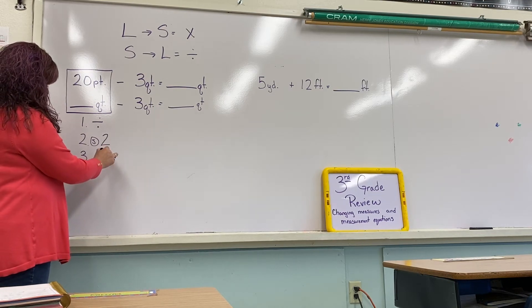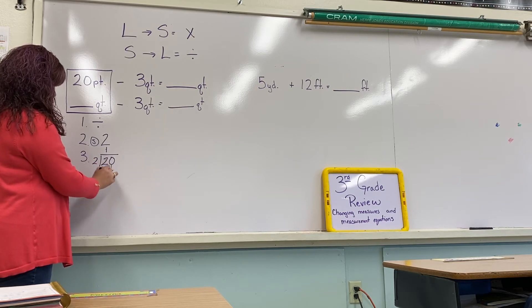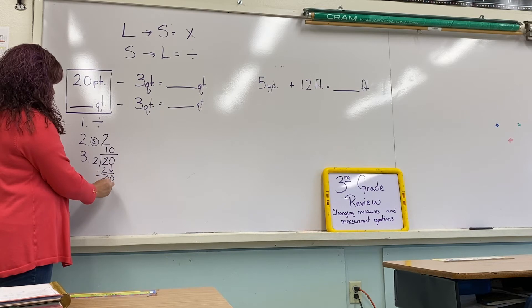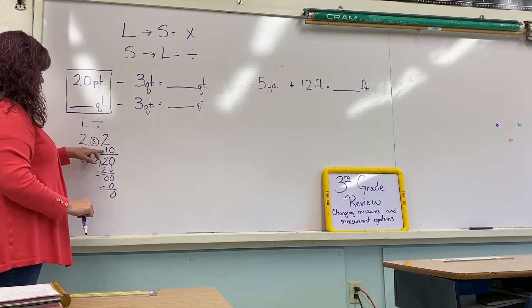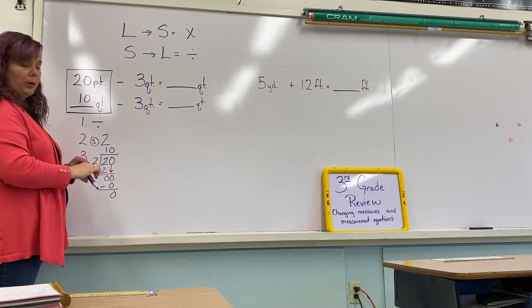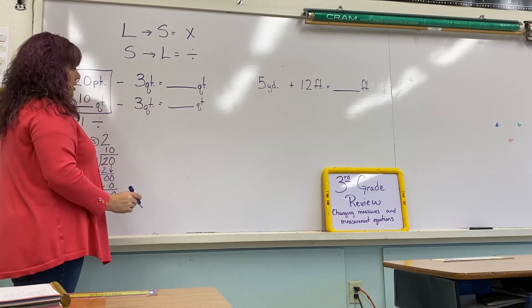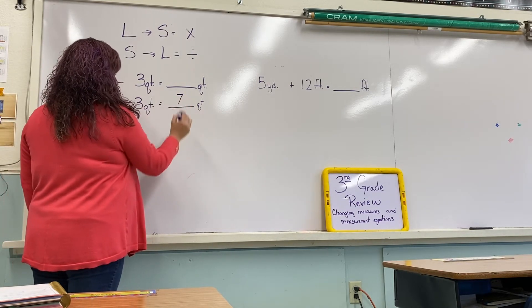Now we're going to solve: 2 goes into 2 one time; 1 times 2 is 2; 2 take away 2 is 0. Can 2 go into 0? No, so zero goes there; zero times 2 is 0; take away 0 is 0. No remainder, so our answer is 10. We take our 10 and write it back up in our problem: 10 quarts take away 3 quarts equals how many quarts. 10 take away 3 is 7 — we write 7 as our answer.